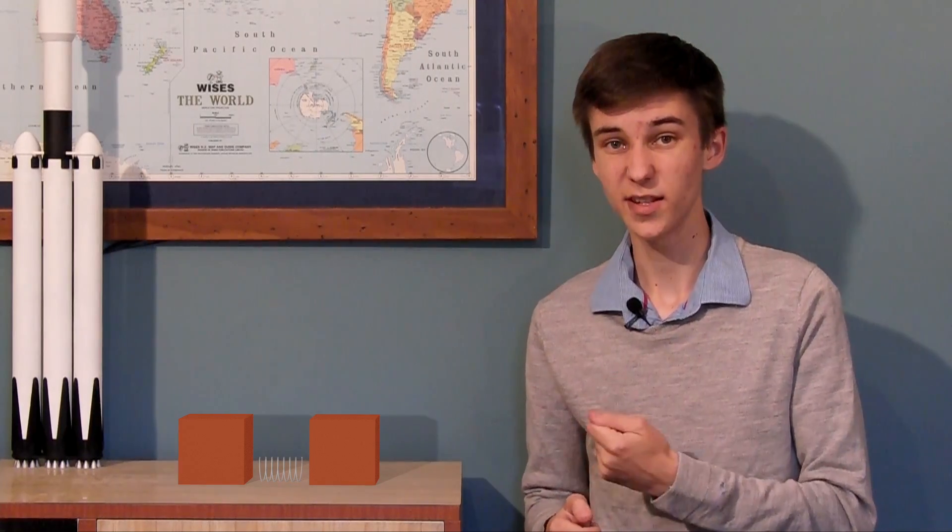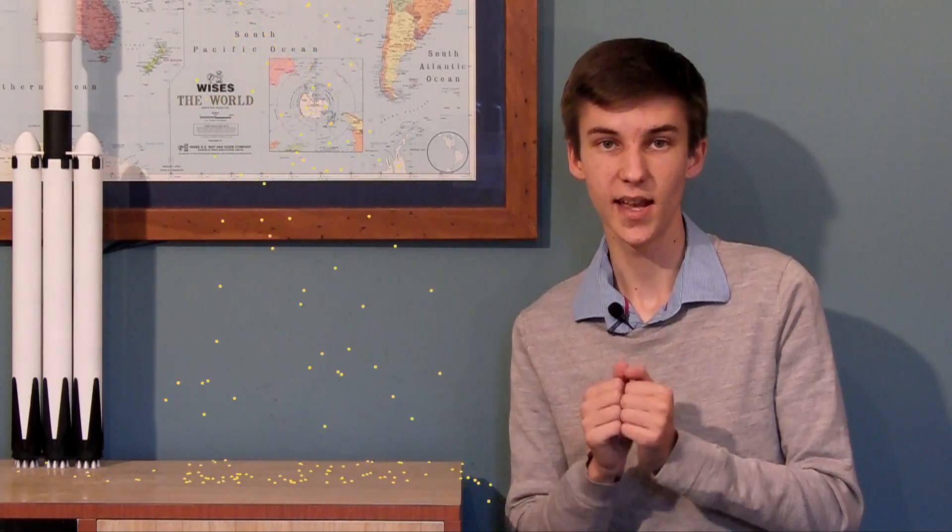So in a spacecraft, this is how the thruster works. It combusts fuel in the combustion chamber, making pressure, releasing gas out the back. The gas is one of the blocks, the spacecraft is the other block, and the pressure produced in the combustion chamber is that spring pushing the two apart from each other.